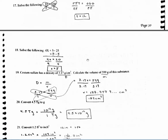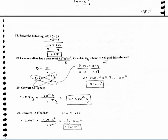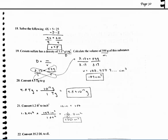For number 18 — sorry, it's a little blurry — you're solving for X. So what you want to do is subtract by 5. It's going to be 4X equals 20. Then you can isolate X by dividing by 4, and you get X equals 5.